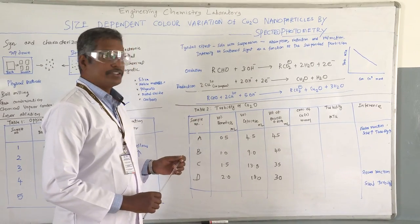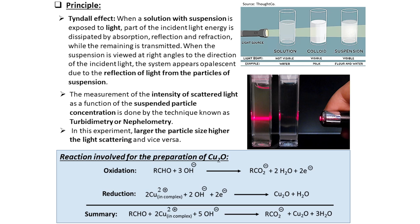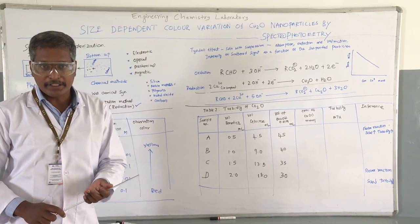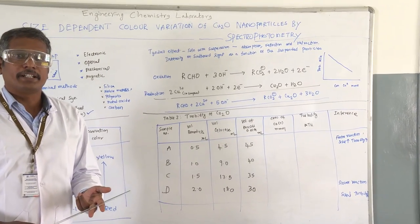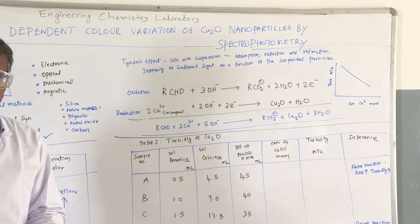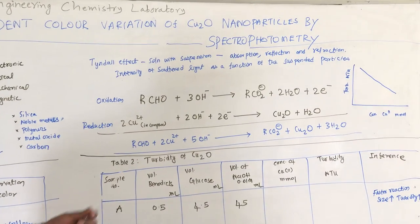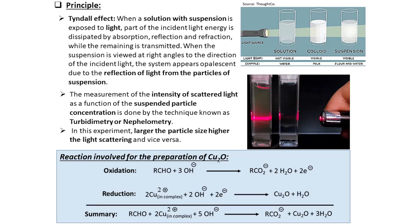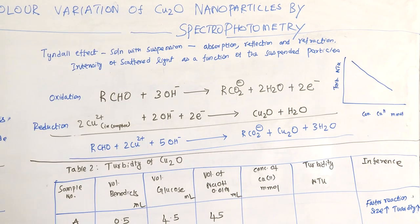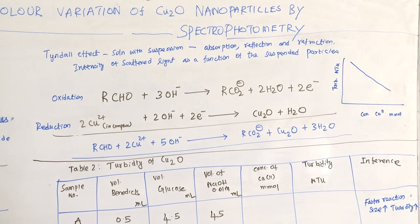When you combine all these chemicals, you take the Benedict solution — which is copper sulphate, sodium carbonate, plus citrate solution. To that we add glucose, which has the aldehyde group in it, in the presence of sodium hydroxide. We will go back to the tabular column — this is the Benedict solution.